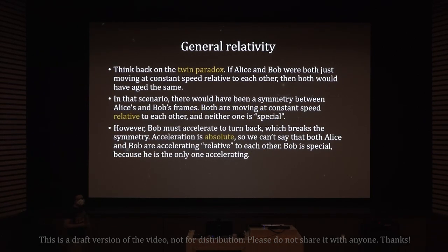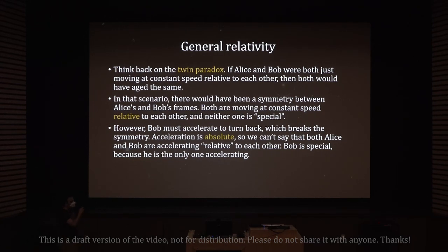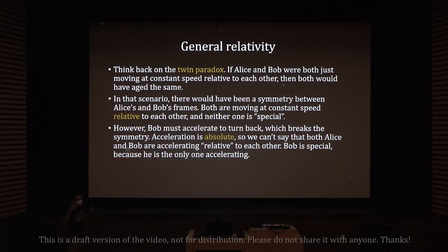Think back on the twin paradox. If Alice and Bob were both just moving at constant speed relative to each other, then both would have aged the same — there would be a symmetry between their frames. I can't say Alice is not moving and Bob is moving, because according to Alice that's the case, but according to Bob he is not moving and Alice is the one moving, and neither is more correct. It's all just relative — hence the name relativity.